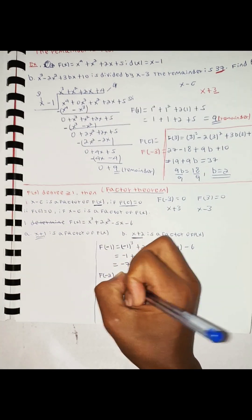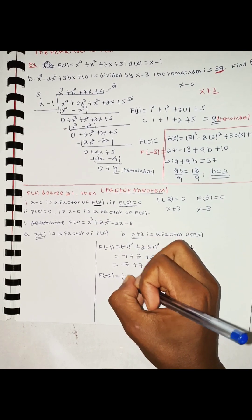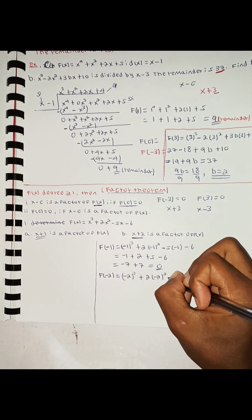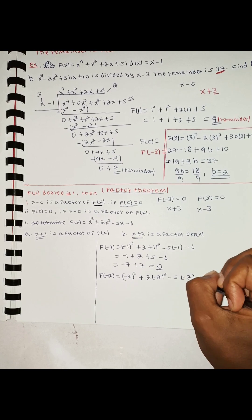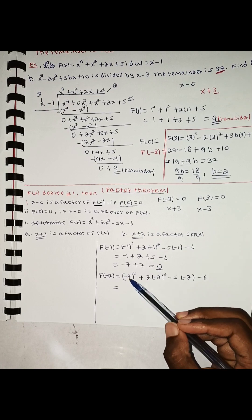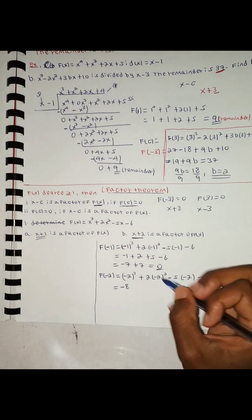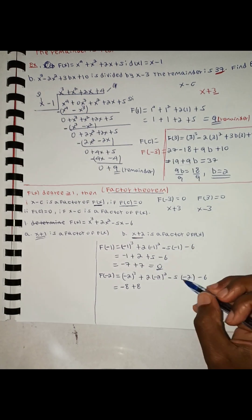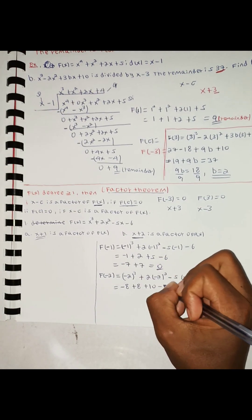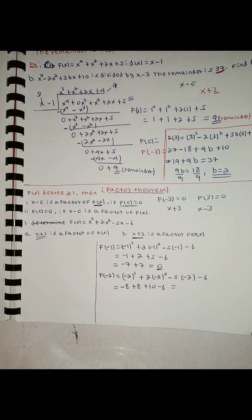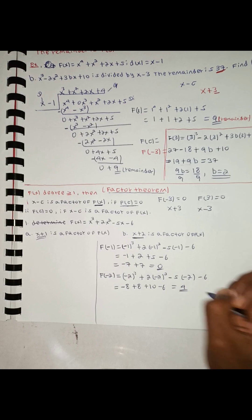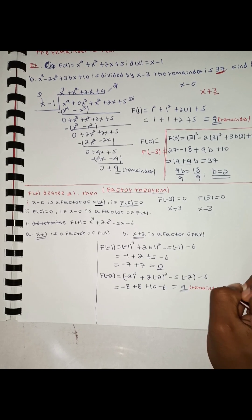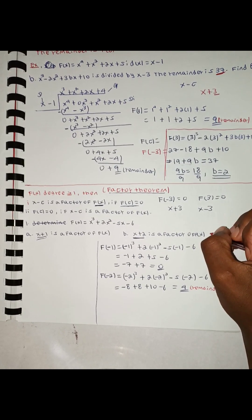Testing x plus 2: f of minus 2. Minus 2 cubed is minus 8. Plus 2 times minus 2 squared: minus 2 squared is 4, so plus 8. Minus 5 times minus 2 gives plus 10. Minus 6. So: minus 8 plus 8 is 0, plus 10 is 10, minus 6 gives 4. Remainder is 4, so x plus 2 is not a factor.